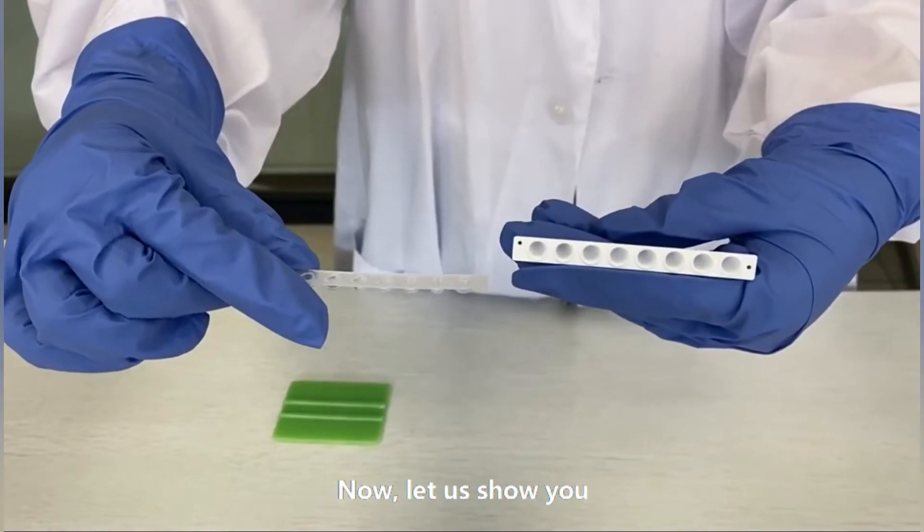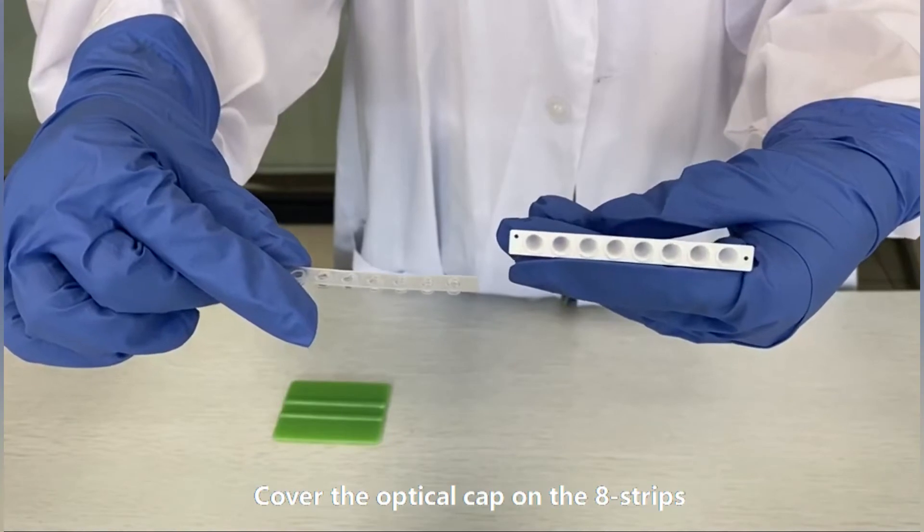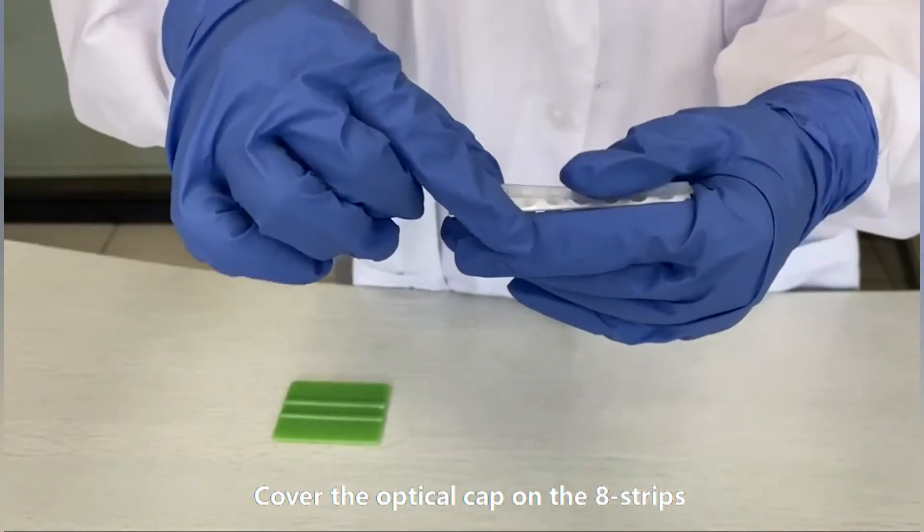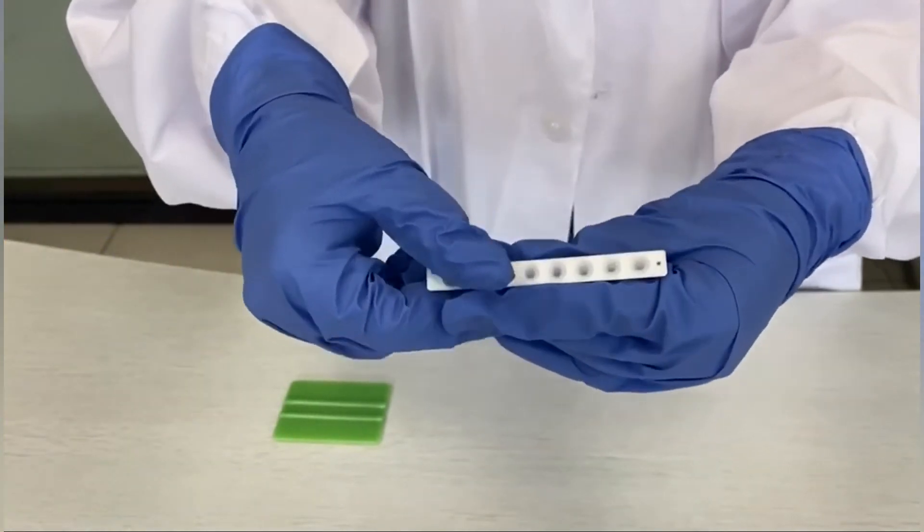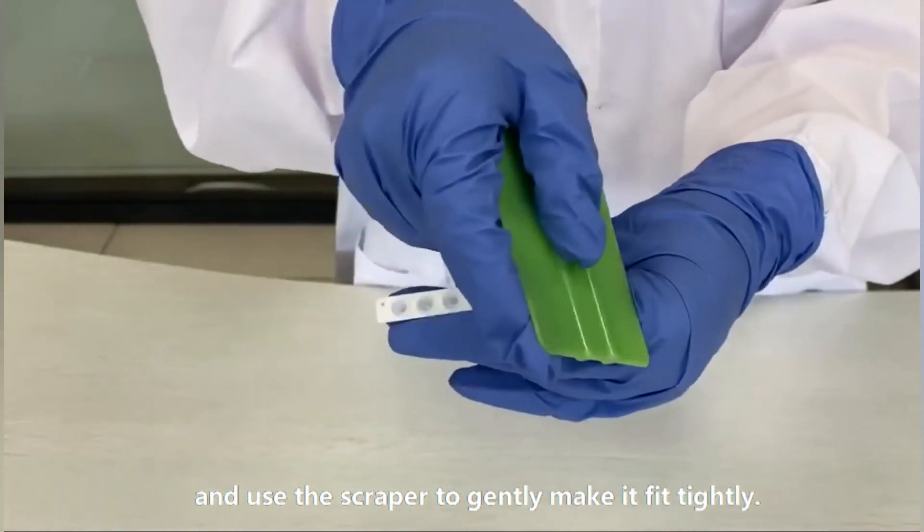Now, let us show you how to use the scrapper. Cover the optical cap on the eight strips and use the scrapper to gently make it fit tightly.